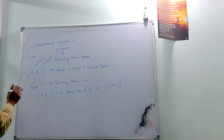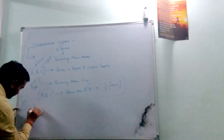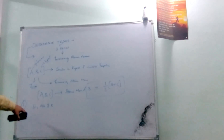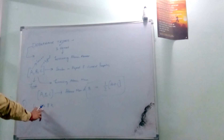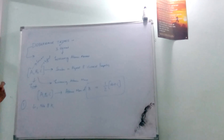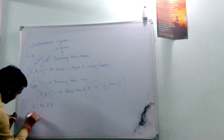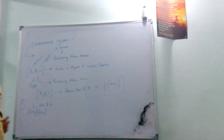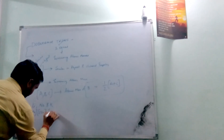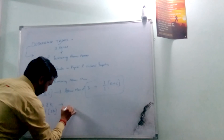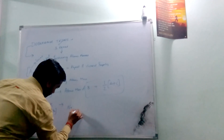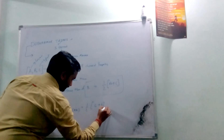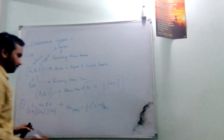For example, the first triad is lithium (Li), sodium (Na), and potassium (K). The atomic mass of lithium is 6.9, sodium is 23, and potassium is 39. The atomic mass of sodium is the average of lithium and potassium, as given by Dobereiner.